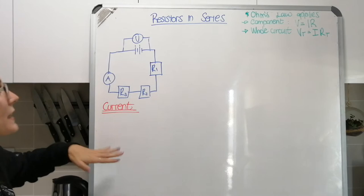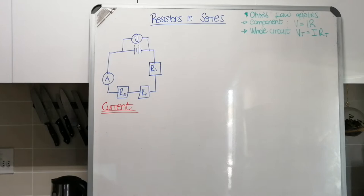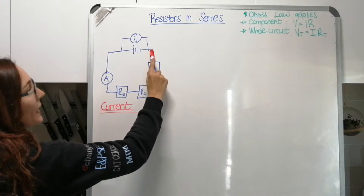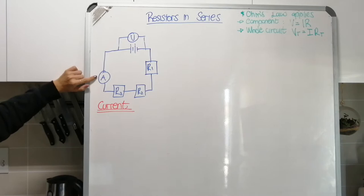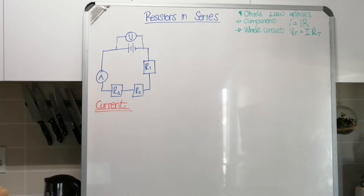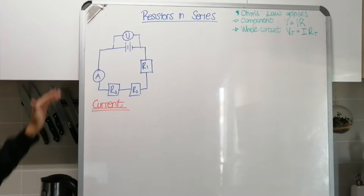How does a series circuit affect the current? Well, that comes from the definition of a series circuit — there is only one pathway for the current to follow. So the current going through your battery is the same as the current going through each resistor. Whatever the reading on the ammeter is, that value for the current will be the same everywhere in the circuit. Because current follows a single pathway in a series circuit, the current is the same everywhere.